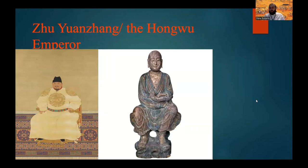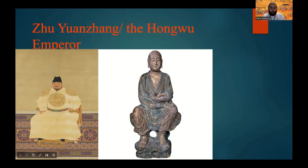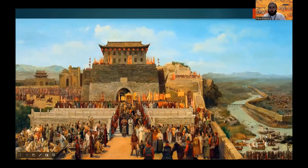At the backdrop of these rebel groups forming arose one specific individual: Zhu Yuanzhang, who originally started his life as a Buddhist monk. However, as the Buddhist temple began to lose funding from the Yuan Dynasty and the monks began to starve from the famine, Zhu Yuanzhang left his monkhood, eventually joined the Red Turbans — first as a common soldier — and rose through the ranks to become its leader. He eventually gathered the Red Turbans into a large, cohesive, well-trained army, marching and laying siege to Nanjing, taking it in the 1350s and making it his capital.